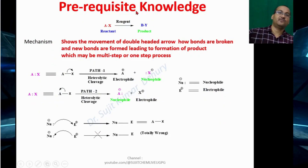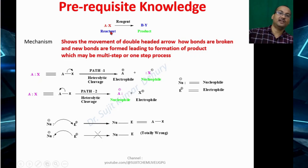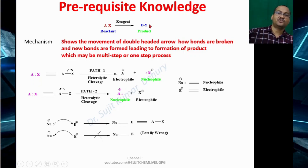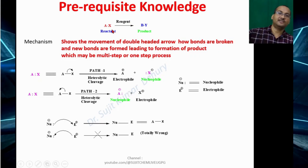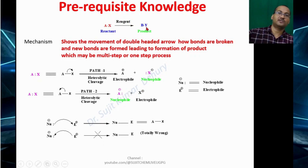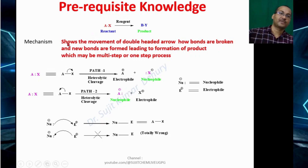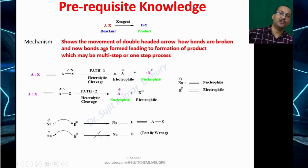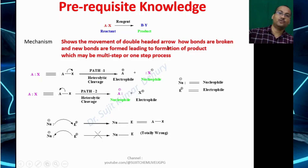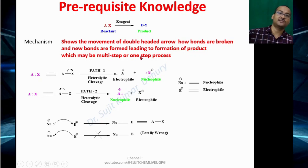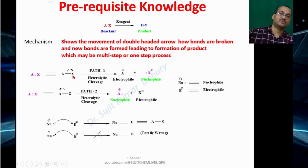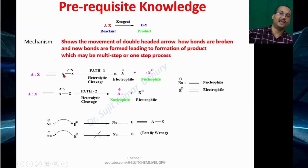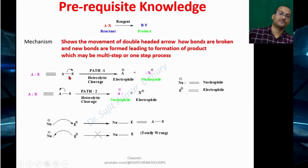Let us discuss some prerequisite knowledge about mechanism. We write the reactant that gives rise to a product in the presence of a reagent, and how this conversion occurs is the mechanism. Mechanism shows the movement of double-headed arrows — how bonds are broken and new bonds are formed — leading to product formation, which may be a multi-step or one-step process. For example, bond Ax, represented by a line or two dots, represents two electrons.